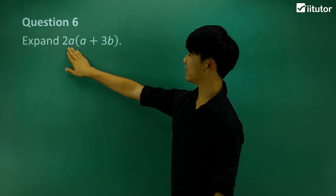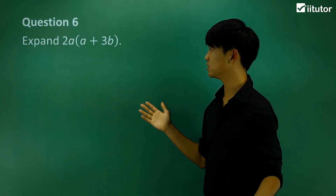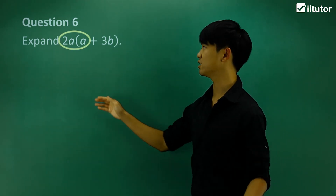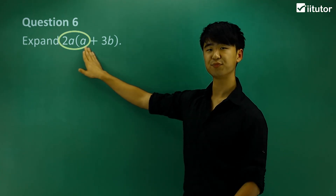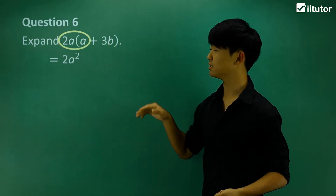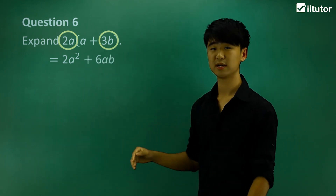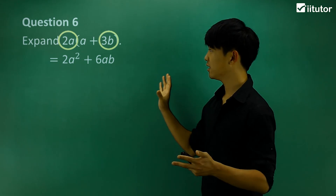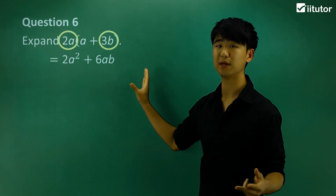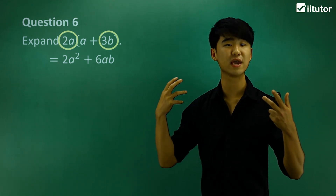In question 6, we expand 2a(a+3b). As long as we don't make any silly mistakes, we do the same thing. Multiply 2a by the first term a to get 2a squared. Then multiply 2a by positive 3b to get 6ab. The expanded form is 2a² + 6ab. This is the basic form of expansion, but it's very important for building our algebraic skills.